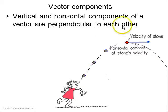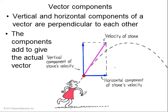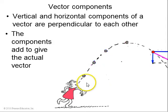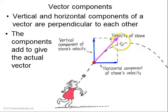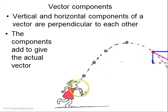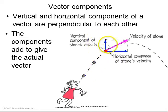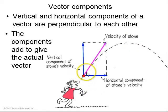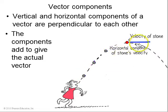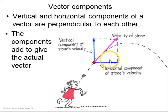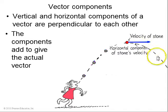So vectors have components. Vertical and horizontal components of a vector are perpendicular to each other, and the components add to give the actual vector. Here's an example of a ball in projectile motion. What happens here is that the velocity, which is this magenta vector, is changing as the ball is moving. But it always can be decomposed into a horizontal component, this blue vector, and a vertical component, this blue vector. And what happens due to gravity is that the vertical component is reduced by 10 meters per second per second. But the horizontal component doesn't change. It continues, it's always towards the right, and it's always the same length. But they add to give this magenta vector, which is first up and to the right, and lastly down and to the right.